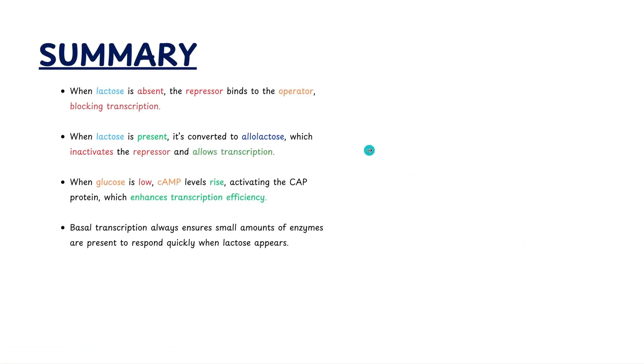In summary, when lactose is absent, the repressor still keeps on binding to the operator blocking transcription. Remember, lactose is no longer being able to be converted to allolactose, which allolactose is supposed to bind to the repressor. When lactose is present, it's converted to allolactose, which inactivates the repressor and allows transcription. When glucose is low, cAMP levels rise because that adenylyl cyclase enzyme is activated. When cAMP levels rise, we activate the CAP protein, and this enhances transcriptional efficiency. And overall, just remember, there's always basal transcription that ensures small amounts of enzymes are present to respond quickly when lactose appears.